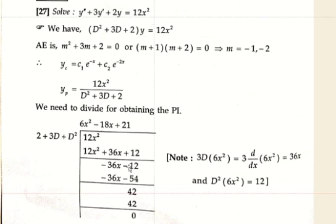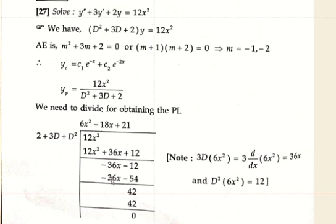Next, take −36x / 2 = −18x. Write −18x in the quotient and multiply all terms by −18x: 2·(−18x) = −36x; 3D·(−18x) = 3·(−18) = −54; D²·(−18x) = 0. Subtract (minus of minus is plus): −36x + 36x = 0; +54 − 12 = 42.